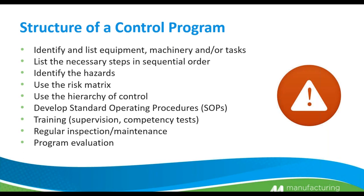Next, develop standard operating procedures — SOPs. Then determine what kind of training is needed: is there supervision, and do we have competency tests to prove that training is efficient and effective? We then need regular inspection and/or maintenance. And for all control programs, we need to have a program evaluation at the end, usually done yearly.